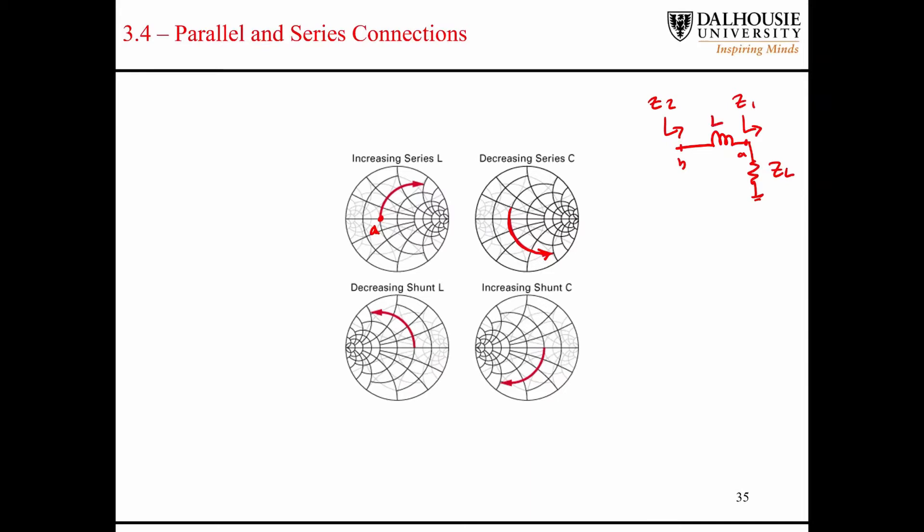If you increase the value of that inductor, your position on the Smith chart rotates along the curve of constant resistance in the upward direction.